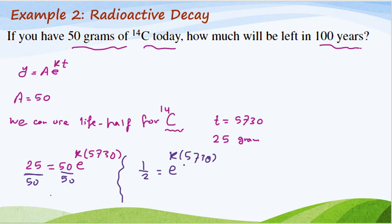Okay, we can take natural log for both sides. ln(1/2) = k × 5730. Divide both sides by 5730.